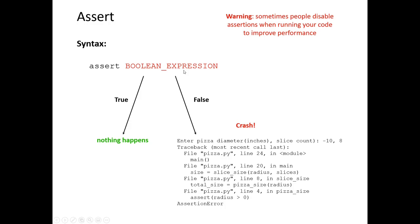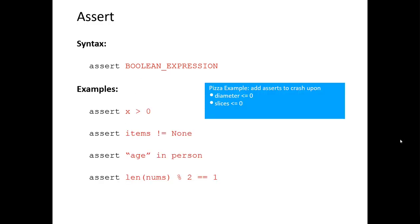Here's how assert works: if the boolean expression is true, absolutely nothing happens. If the boolean expression is false, the code will crash with an assertion error traceback. A heads-up: this causes code to run a tiny bit more slowly since it evaluates the boolean expression. It's also possible to disable all assertions — programmers often use them during development but disable them in release mode. Other people can also turn them off, so you can't count on them always being present.